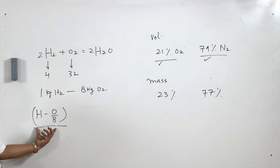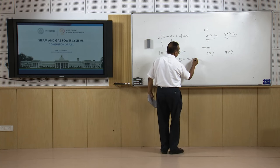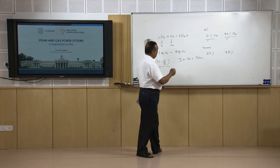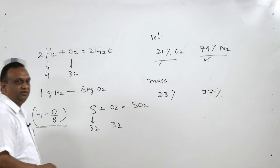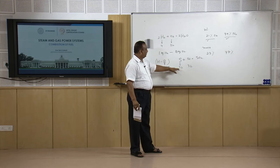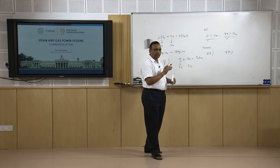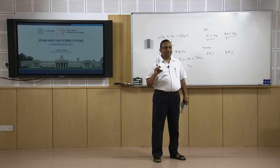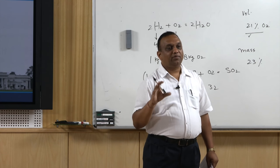Similarly for sulfur: S + O2 = SO2. Sulfur is 32, so 1 kg of oxygen is required to burn 1 kg of sulfur. For each component individually, the oxygen required is calculated, divided by 0.23, to get the mass of air required for combustion in the boiler.